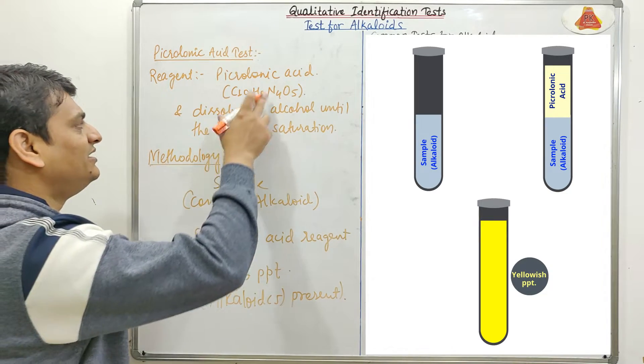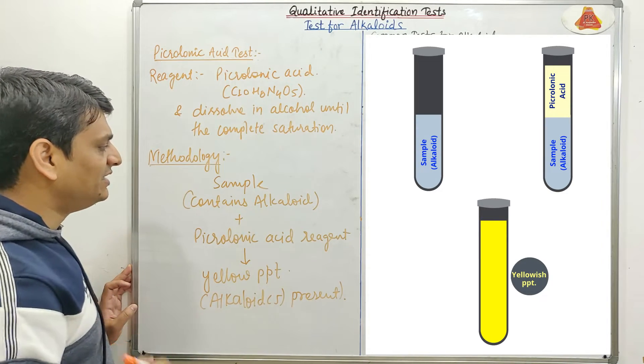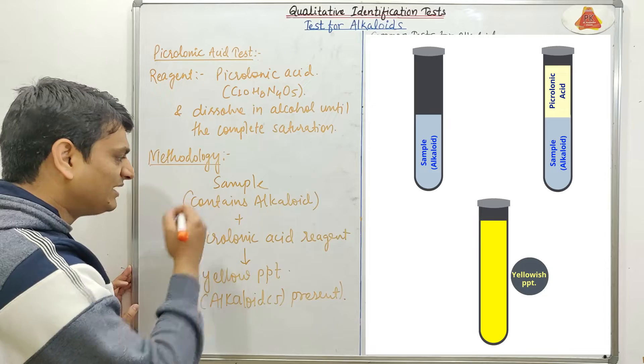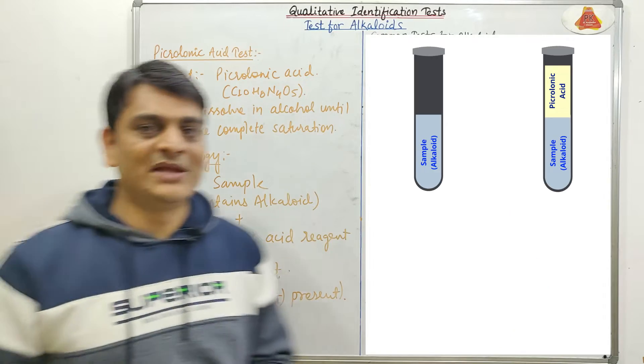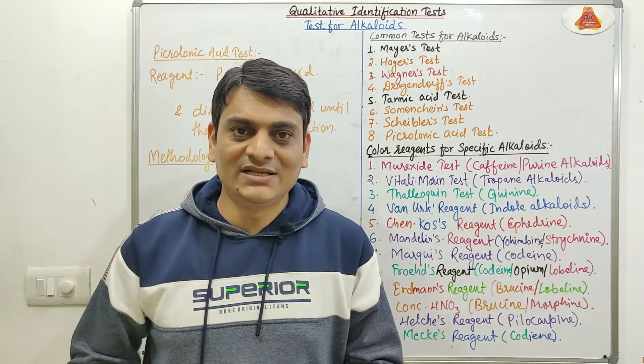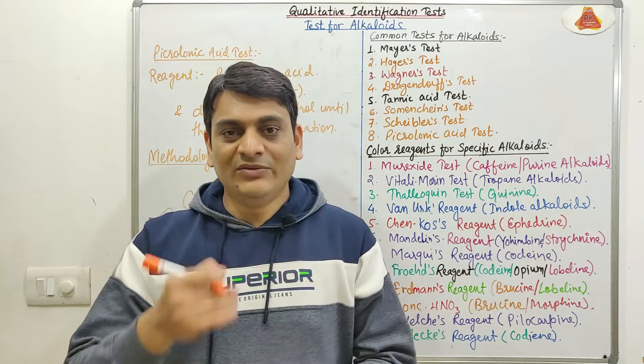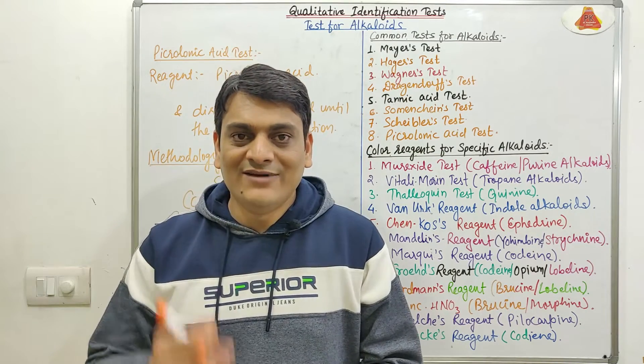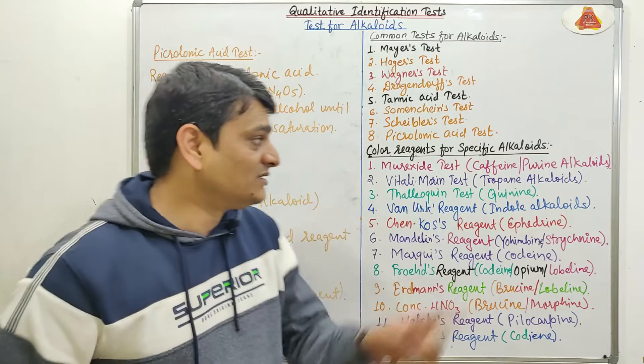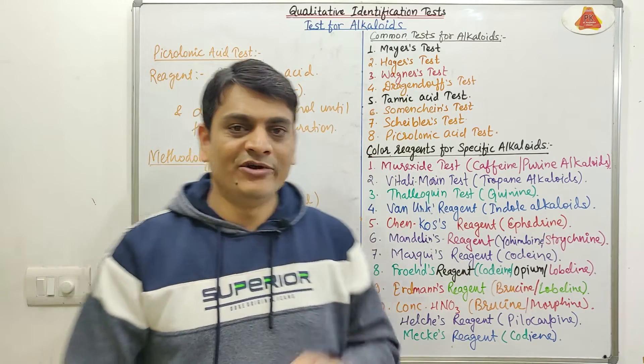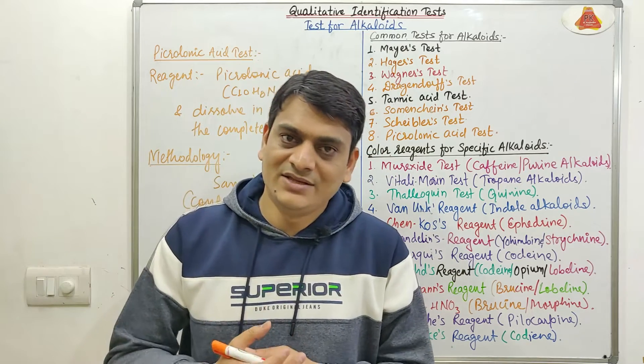After adding the reagent, if we are getting a yellow precipitate, it means alkaloid or alkaloids are present in our sample. This is the details of the reagent and the methodology for Picrolonic Acid test. Now in my next video I will discuss the details about Neuroxide test. Thank you.